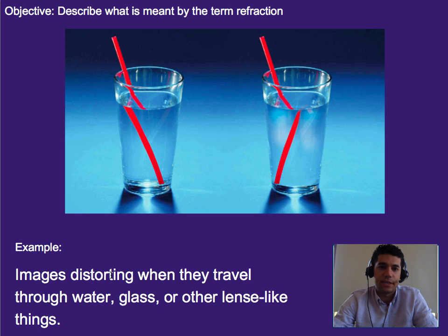Another example is that this can sometimes cause distortion in images, so things that we see. So here we know this straw is a complete straw. It'll work when we use it to drink this water, but because of the refractive properties of water compared to air, we get this weird thing happening where it looks like there's a break in the straw.